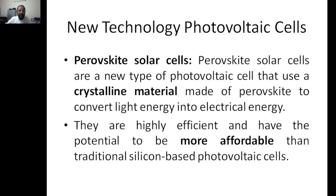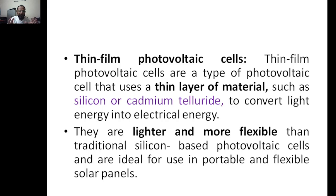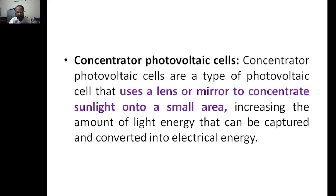New photovoltaic technologies include perovskite solar cells, which use a crystalline perovskite material and are more affordable than conventional silicon-based photovoltaics. Thin-film photovoltaics use a thin layer of material such as silicon or cadmium telluride to convert light to electrical energy — they are lighter, more flexible, and suitable for portable applications.